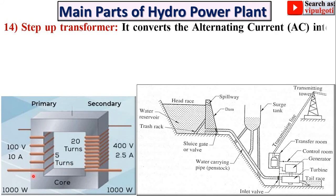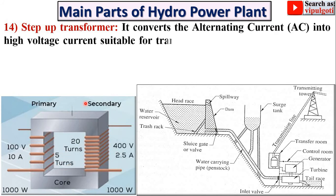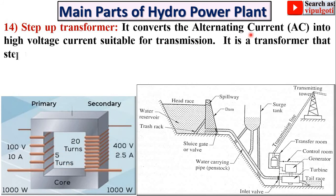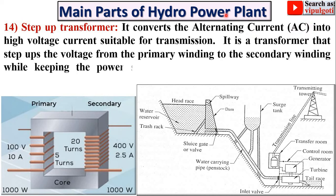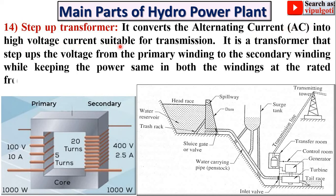Next: step-up transformer. Here you can see the step-up transformer. It converts alternating current (AC) into high voltage current suitable for transmission. Here you can see the input side is the primary winding, and the output side is the secondary winding. The number of turns in the secondary winding is more than the primary winding — that's why it is called a step-up transformer.